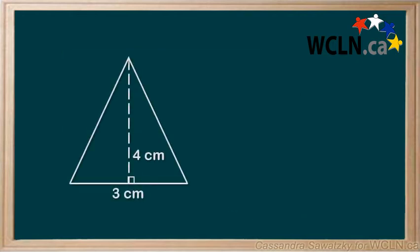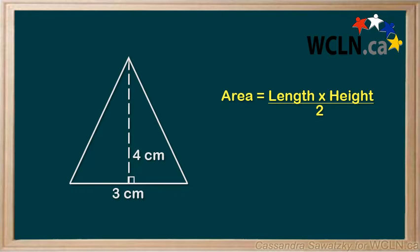Next, let's look at this triangle. The equation we will use this time is area equals length times height divided by 2. Be careful when you're looking at the height of triangles, because sometimes it will be indicated here. A label here shows the length of the side, not the height of the triangle.